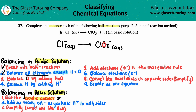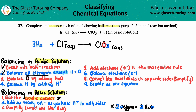Step three: balance oxygen by adding H₂O. The trick is: for every one oxygen you need, you add one H₂O. I have three oxygens on the product side and none on the reactant side, so I add three H₂Os to the reactant side. That balances the oxygen component.